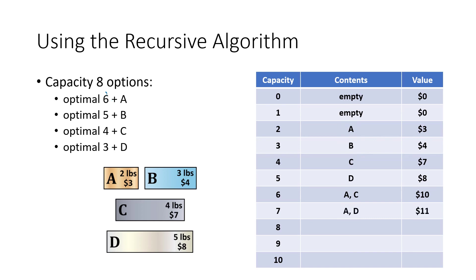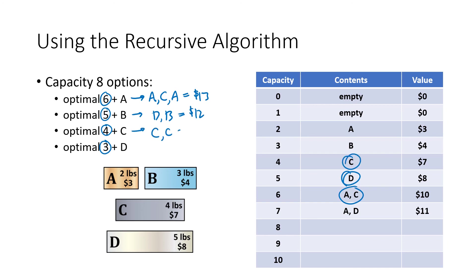For capacity eight, the remainders are six, five, four, and three — obtained by subtracting the weights of A, B, C, and D from eight. The optimal six-pound (A and C) plus A = thirteen dollars. The optimal five-pound (D) plus B = twelve dollars. The optimal four-pound (C) plus C = two C's = fourteen dollars. The optimal three-pound (B) plus D = twelve dollars. The biggest value is fourteen dollars, so the optimal eight-pound knapsack is two C's.